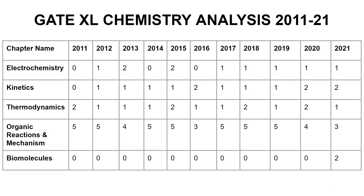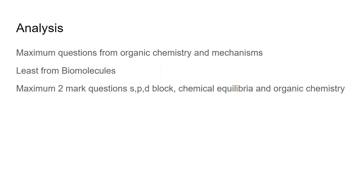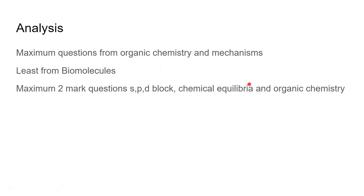So those are the nine different topics. You can download the mark analysis distribution PDF from the description, or join my Telegram link where other PDFs are also available. Coming to the analysis: maximum questions have come from Organic Chemistry and Mechanisms, while very least from Biomolecules. Two mark questions were asked from SPD Block Elements, Chemical Equilibria, and Organic Chemistry — so those are the chapters to focus on for the two mark section.